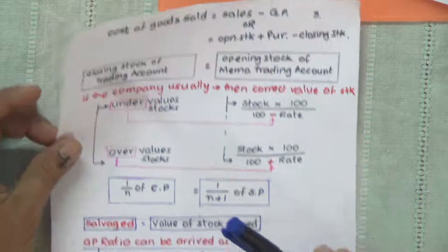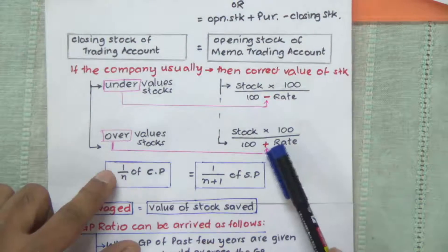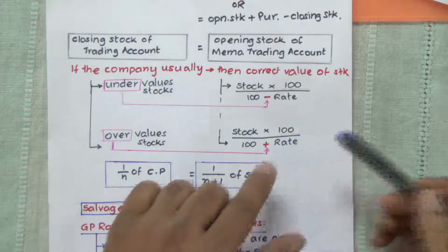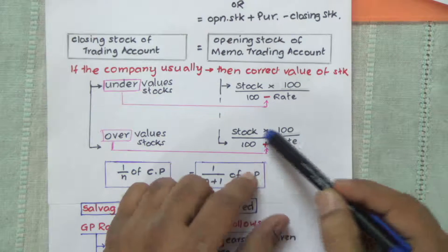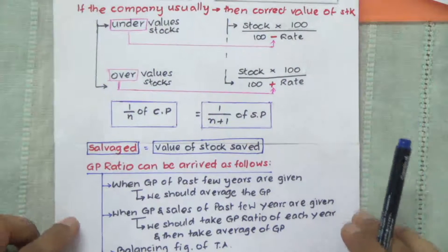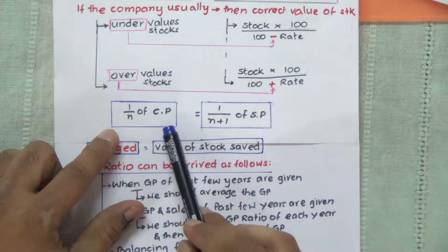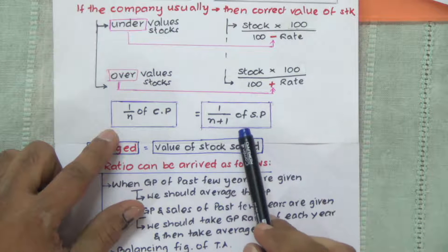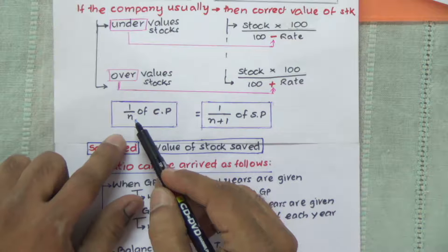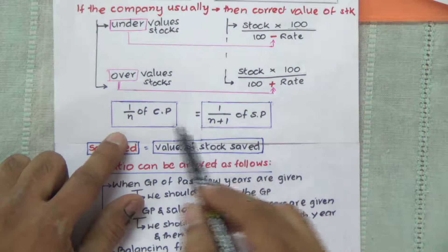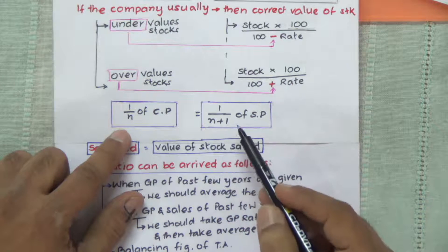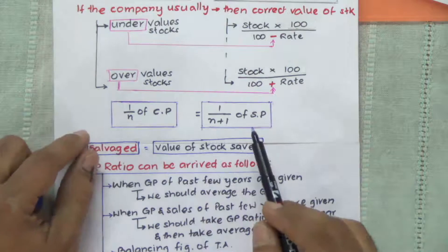When the stocks are overvalued, we use the plus sign, because if this is 100%, stocks have been taken at more than 100%, so we deduct — the denominator gets divided by the higher value. The next concept is 1/N of cost price. CP equals 1/(N+1) of selling price. Whatever we have as denominator for cost price, the selling price would be one higher digit. You will get more clarity when we start working out problems.